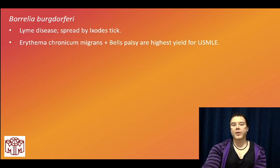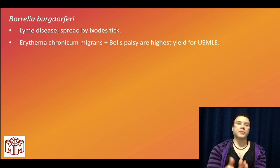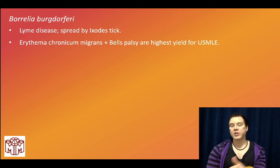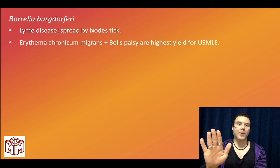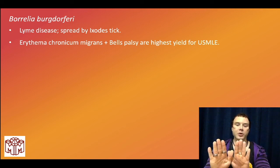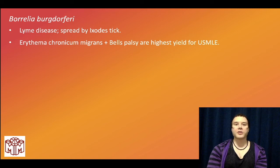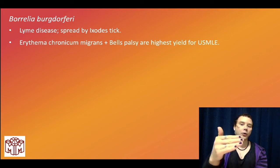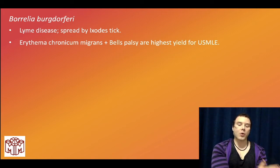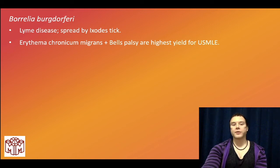Lyme disease presents with erythema chronica migrans (target rash) and Bell's palsy — super high yield for USMLE. They might show a picture of a child with Bell's palsy and a circular rash on his arm. Treatment: give doxycycline if age nine or older, amoxicillin if eight or younger, and amoxicillin for pregnant women.